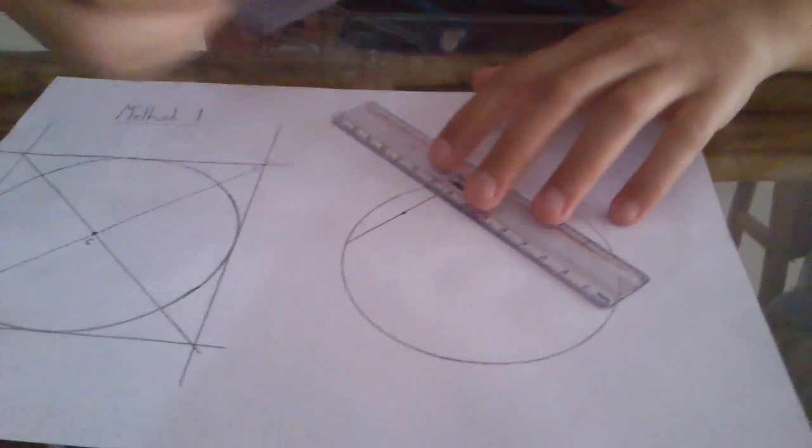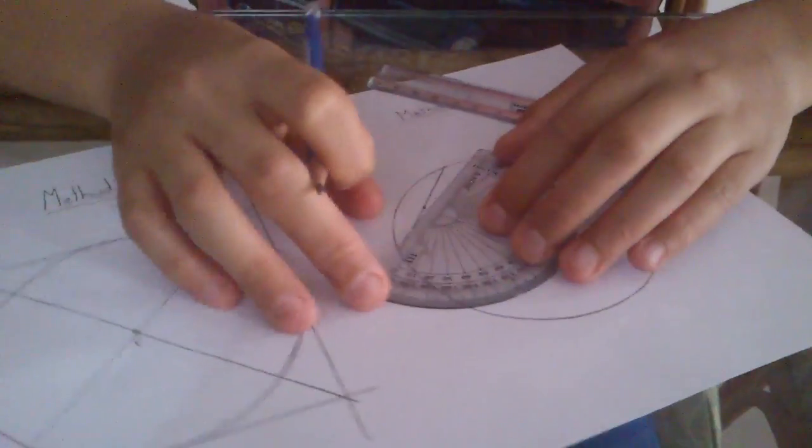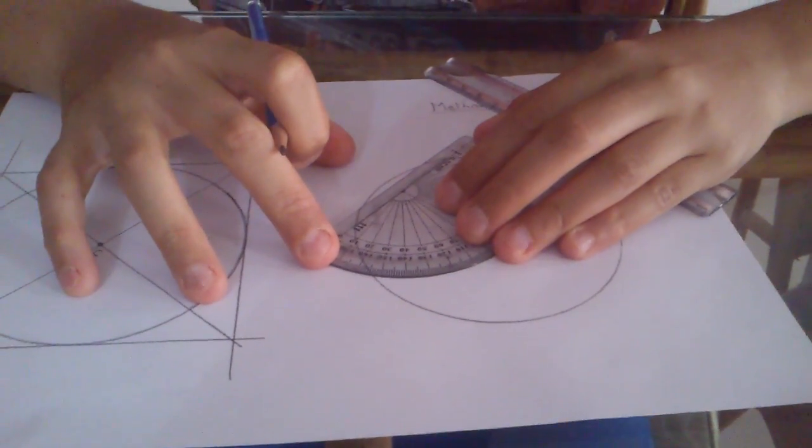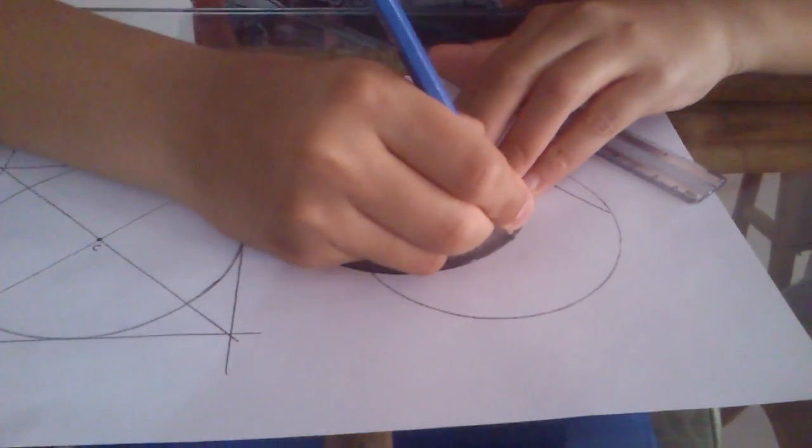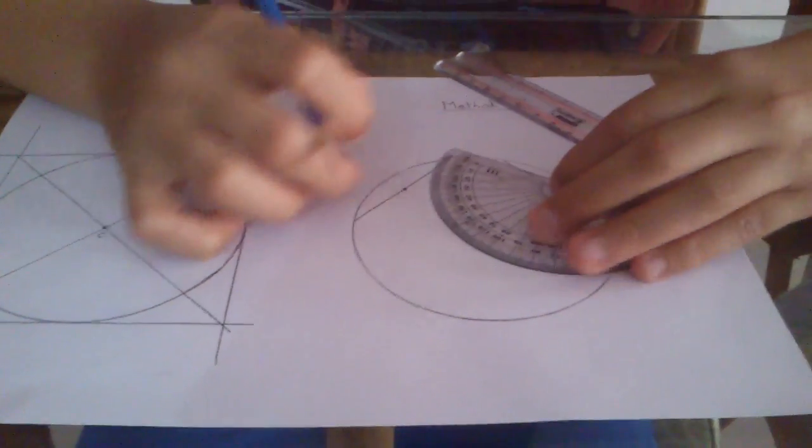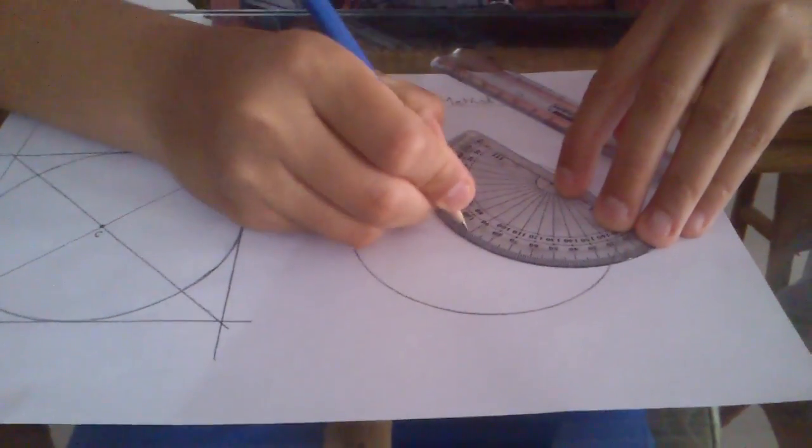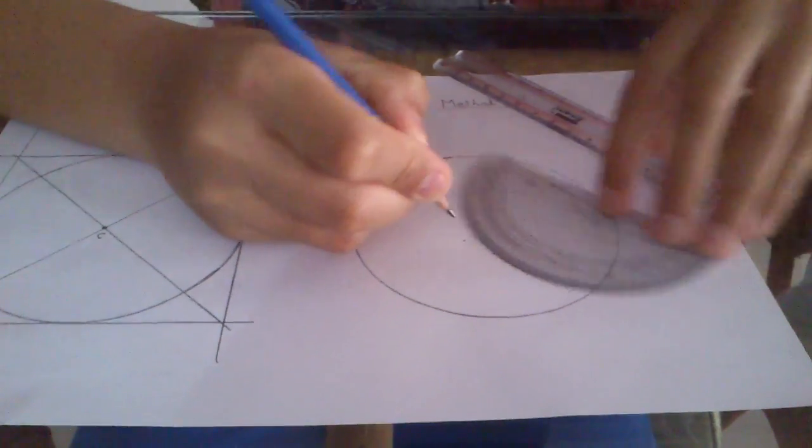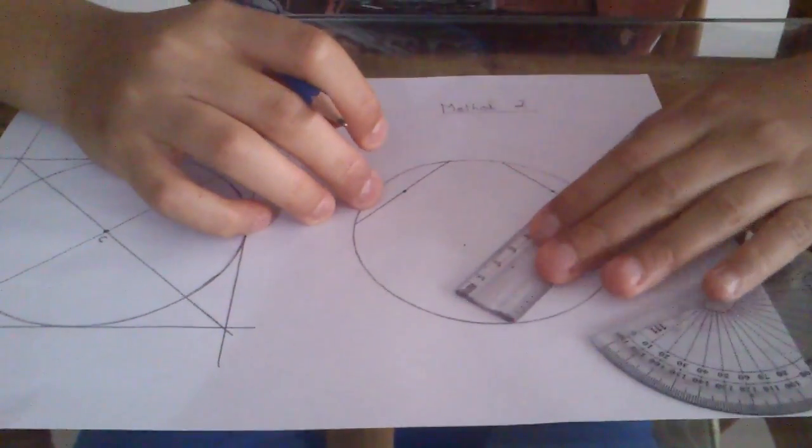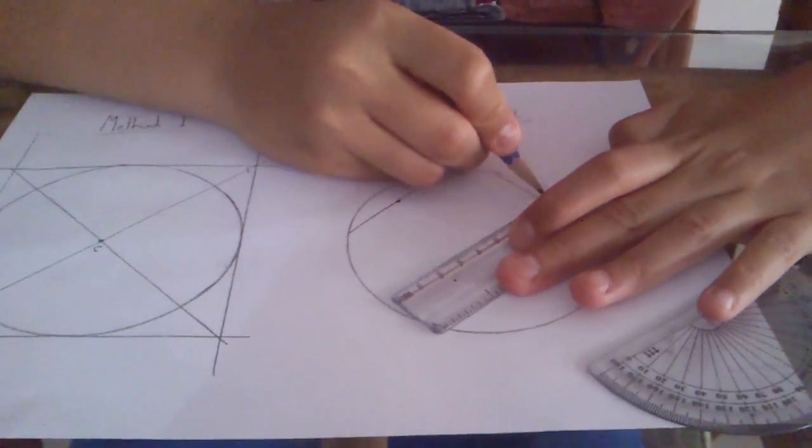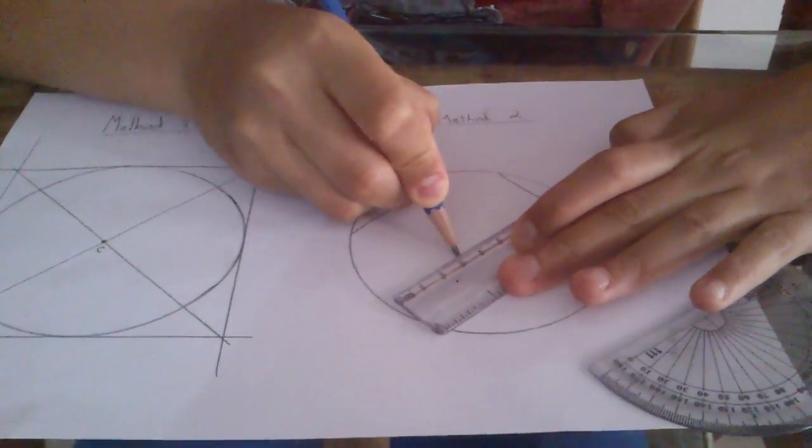And now you take your protractor and you measure a right angle on this line from the midpoint. Same with the other chord. And now you simply draw a line from that point to the other points.